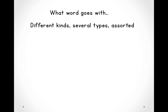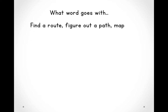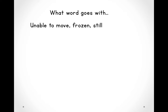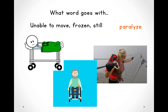What word goes with: different kinds, several types, assorted? If you said various, you are correct. Which word goes with: find a route, figure out a path, map? If you said navigate, you are correct. What word goes with: unable to move, frozen, or still? If you said paralyzed, you are correct.